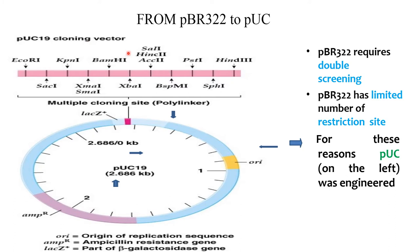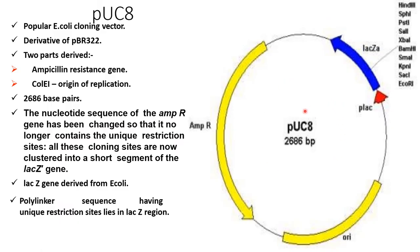PUC19 cloning vector was derived from PBR322. PBR322 required double screening and had a limited number of restriction sites, so PUC19 was engineered to overcome this. PUC8 is a popular E. coli cloning vector also derived from PBR322. It consists of 2686 base pairs. Two parts derived from PBR322 are the ampicillin resistance gene and the ColE1 origin of replication. The nucleotide sequence of the ampicillin resistance gene has been changed so that it no longer contains a unique restriction site.